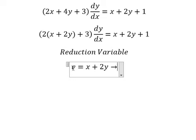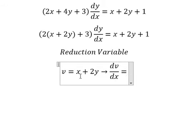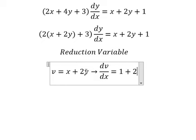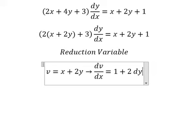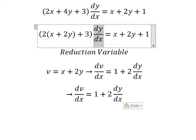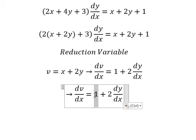If I take the first derivative of both sides, we have dv over dx. The first derivative of x gives number one, and the first derivative of y gives dy over dx.